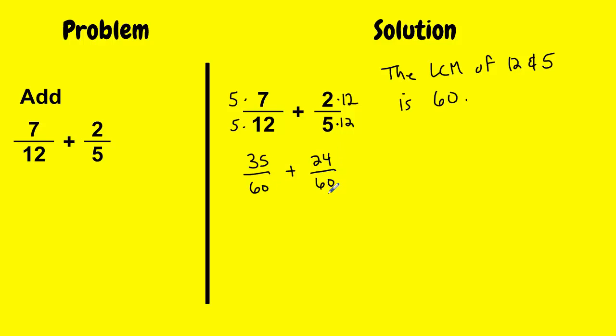I can see I have the same denominator now and I can combine my numerators. So 35 plus 24 all over 60. And my last step is to combine these two and I get 59 over 60. So that's how you add two fractions with different denominators.